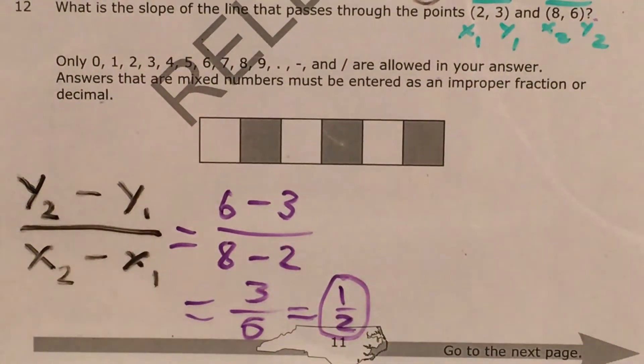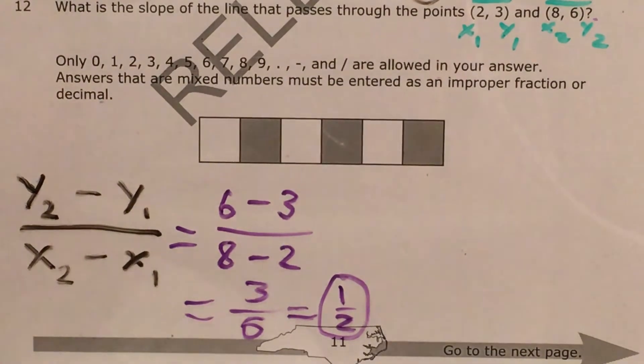And since this is simplified, that's going to be my answer. So using the formula or using the graph, I got the same answer. My slope is 1 half. We're going 1 square up for every 2 squares that we're going right.